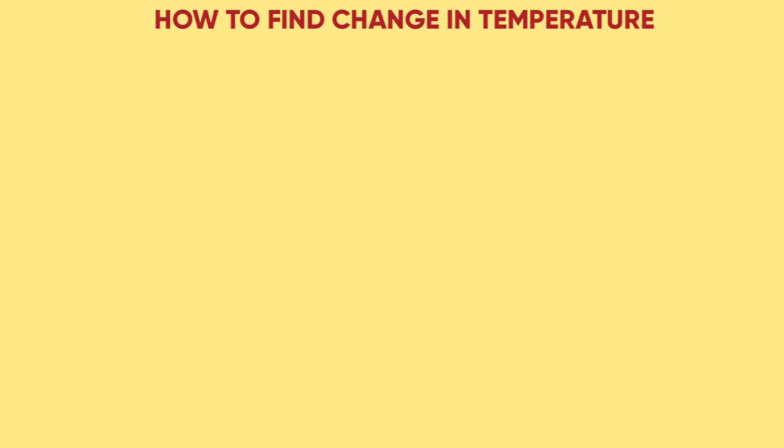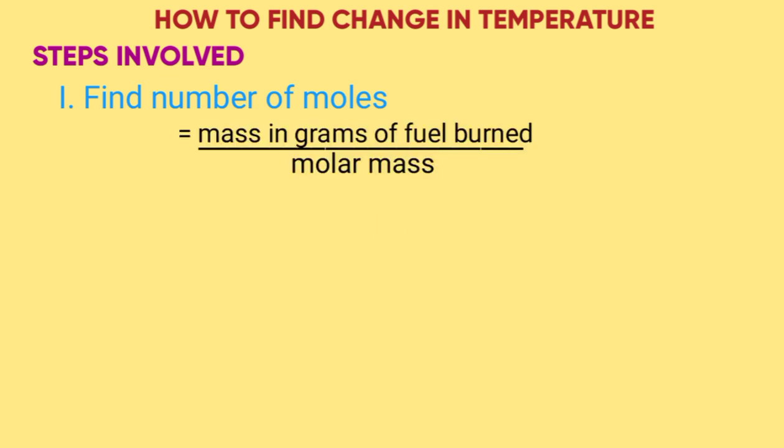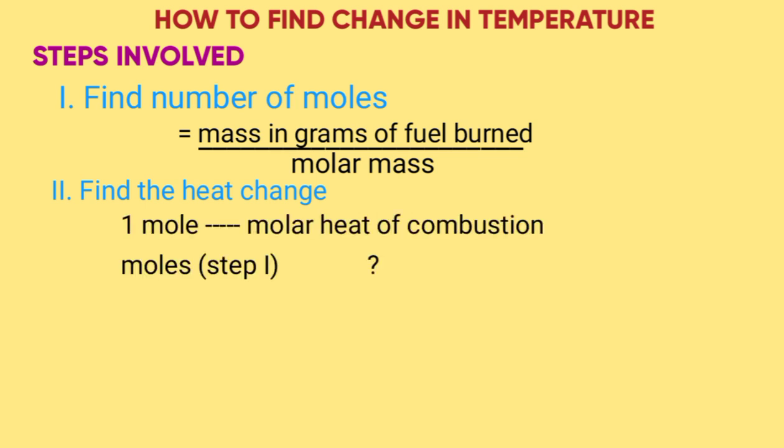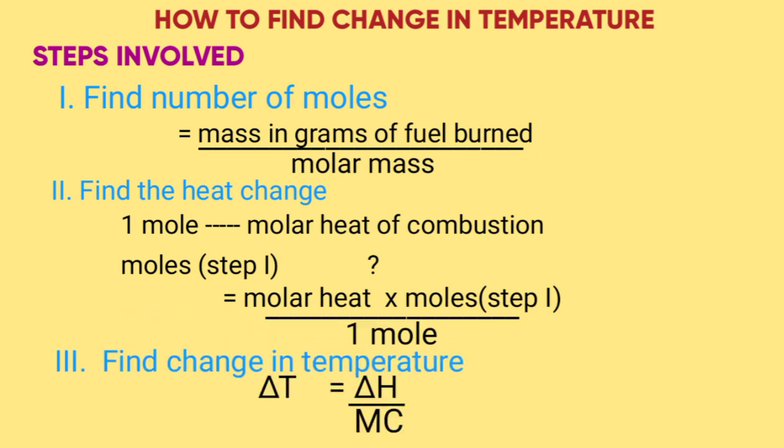In our previous lessons we have looked at how to find change in temperature. It goes through three steps. Step one is to find the number of moles which is given by mass in grams over molar mass. Step two, you find the heat change by using the molar heat of combustion, where you say one mole equals molar heat of combustion, what about the moles in step one? You cross multiply to get the heat change. The last step is change in T equals enthalpy change over MC.